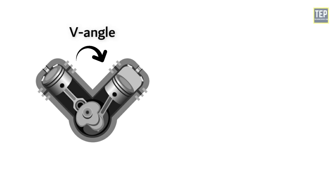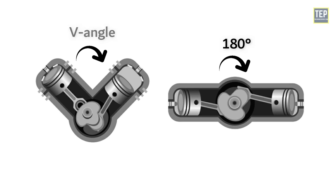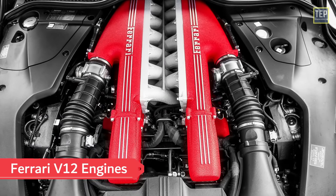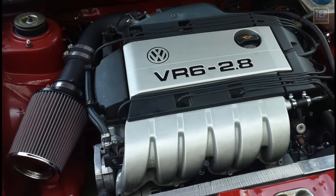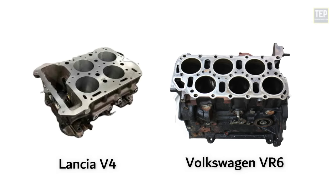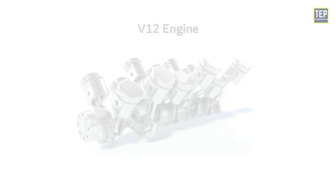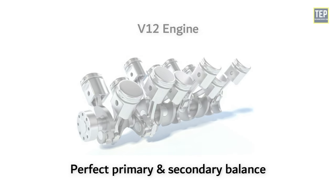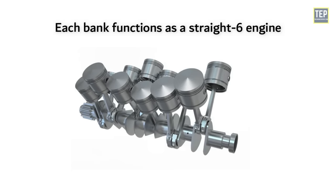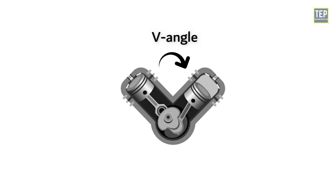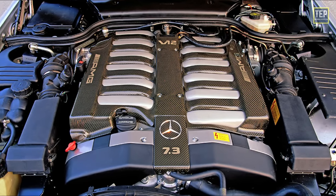The V-angle between the cylinder banks varies significantly. Some engines have used a V-angle of 180 degrees — the same angle as a flat engine — such as several Ferrari V12 engines. At the other end of the scale, the Lancia V4 and the Volkswagen VR6 engine use an angle of 15 degrees along with a single cylinder head used by both banks. The engine balance of a V12 is perfect primary and secondary balance, as each bank functions as a straight six engine, which by itself has perfect primary and secondary balance.